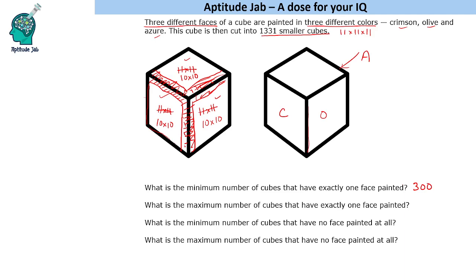Now let us solve for the maximum. In this arrangement there is a common border on one side only, not on both sides of a given face. So in this case, for a given painted face that was 11×11, only one border column is removed.